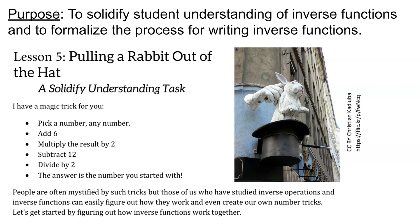You can see it starts off with a magic trick. You take a number, add 6 and multiply by 2, then subtract 12 and divide by 2, and you end up with what you started with. The principles behind this magic trick are inverse functions.